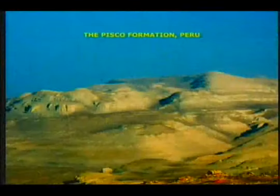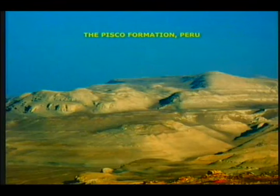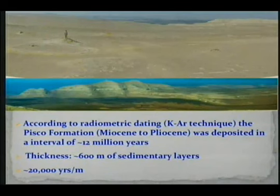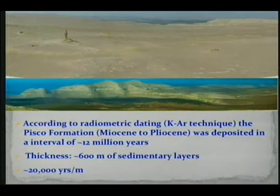You see here multiple layers — keep that in mind, it's a very important piece of information. According to radiometric dating, the Pisco Formation — geologists name stacks of sediments with names; we call it Pisco because there is a town there with that name — geologists think that stack of sediment, about 600 meters thick, took about 12 million years to be deposited.